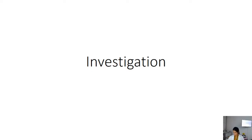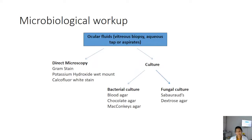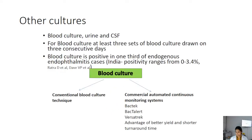For the diagnosis of endogenous endophthalmitis, samples received are ocular fluids: vitreous biopsy collected through vitrectomy procedures or needle biopsy, and aqueous tap or aspirates. Direct microscopic methods include Gram stain, potassium hydroxide (KOH) wet mount, and calcofluor white stain — the latter two specific for fungi. Samples are simultaneously processed for culture to isolate bacteria or fungi. For bacterial culture: blood agar, chocolate agar, and MacConkey's agar. For fungal cultures, Sabouraud dextrose agar (SDA) is routinely used. Other cultures including blood, urine, and CSF are done to locate the focus of infection. At least three sets of blood culture drawn on three consecutive days should be done.